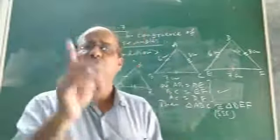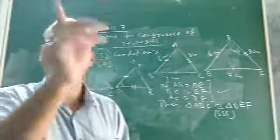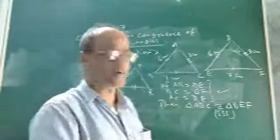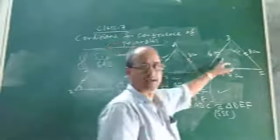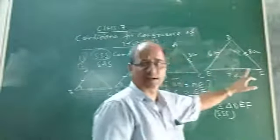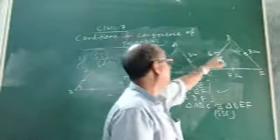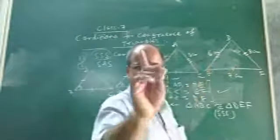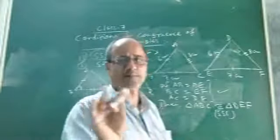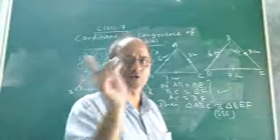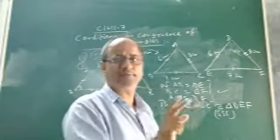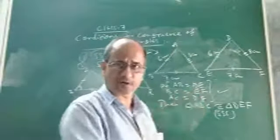Let us discuss in detail. First, let us discuss what is SSS congruence condition. In order to understand SSS, consider two triangles. Suppose ABC is one triangle and DEF is another triangle. Suppose AB and DE form one pair of corresponding sides. I have already discussed in detail what are corresponding sides and corresponding angles in the last class.